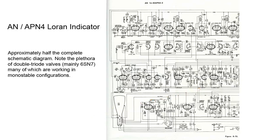Here is half of the APN4-Loran schematic. Note the large number of dual triode valves scattered over the sheet, many of which are used in monostable configurations to display pulses on the tube.